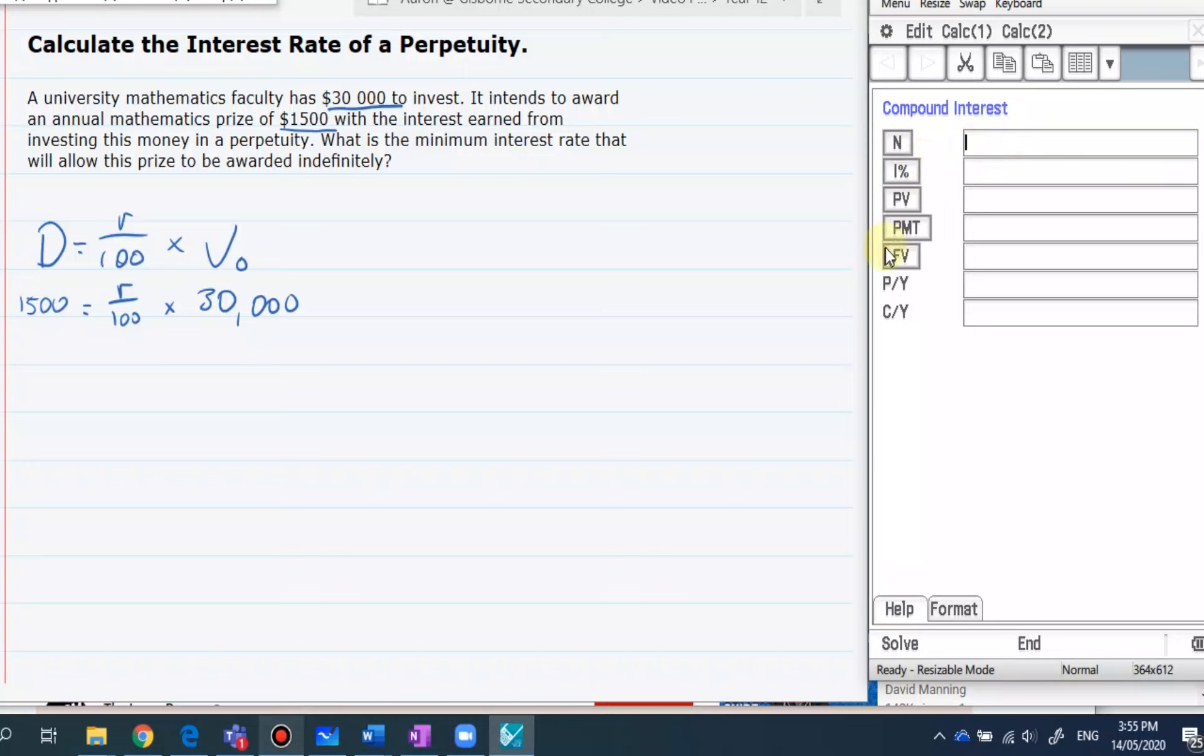So because this is something that recurs every year, the number of times this happens we put down as one because it's the same every time. Then the interest rate we want to solve for.